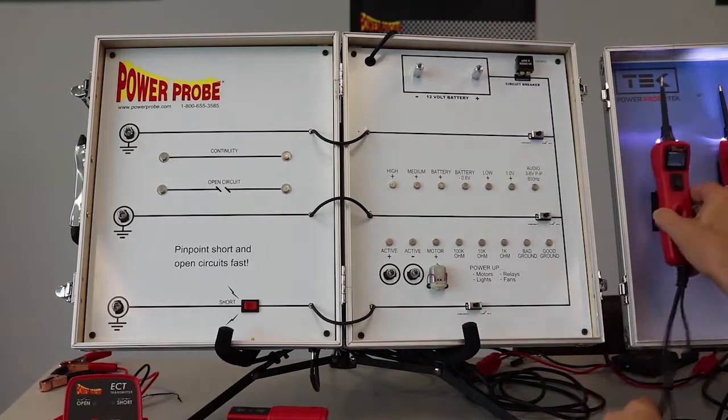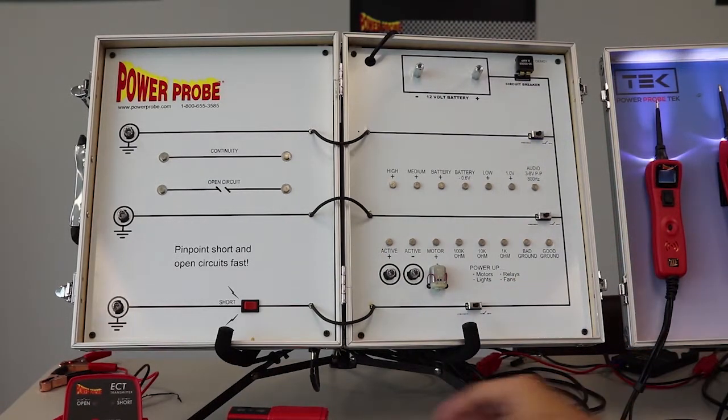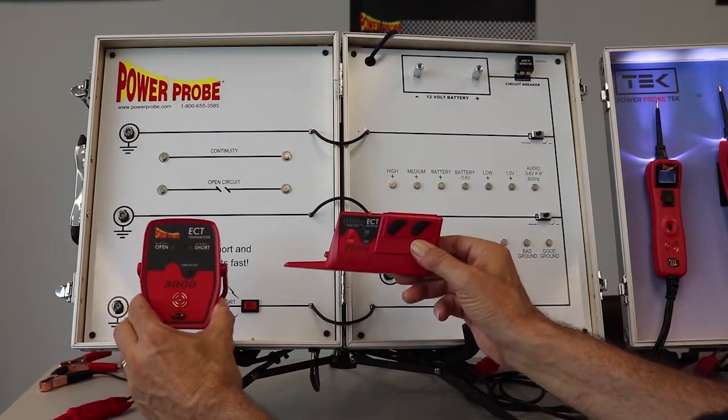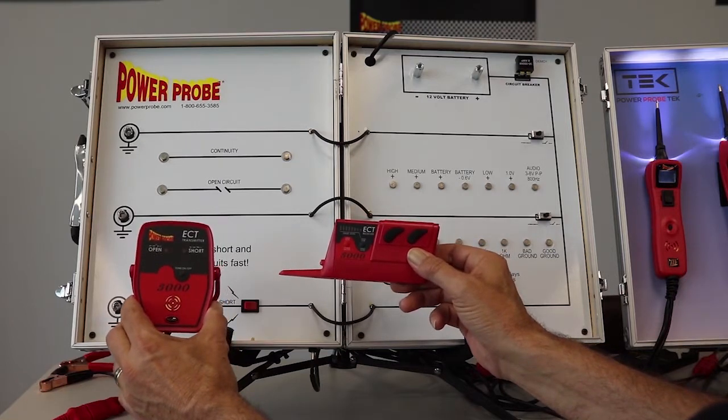So a lot of things you can show on this whiteboard alone, but its greatest strength is for showing off our ECT 3000 short and open finder.